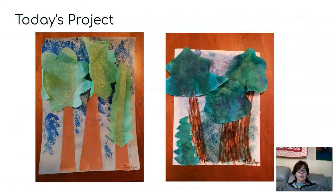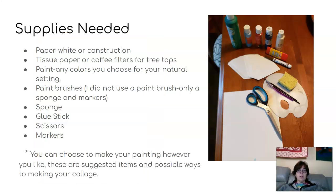So today our project — we're going to make a collage. You can go outside and look in your yard or paint what you see. Some of the supplies you'll need: paper — white or colored construction — maybe tissue paper, coffee filters for your treetops, some paint in any colors you choose for your natural setting, paint brushes, a sponge. I didn't use any paint brushes for mine — I only used a sponge and some markers. But if you want to use paint brushes, that's fine. Also a glue stick, scissors, and markers. You can choose to make your painting however you like. These are suggested items and possible ways to make your collage.